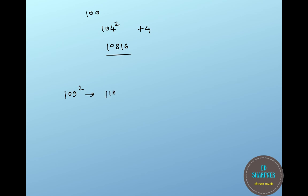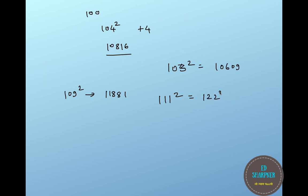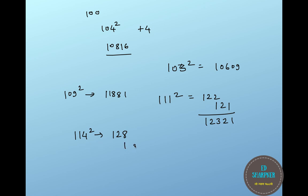The square of 109 is 11881. The square of 103 is 10609. For the square of 111: add 11 to 111 to get 122. Then write the square of 11, which is 121, starting just below the units digit — and add together to get 12321. For the square of 114: add 14 to 114 to get 128. Write the square of 14, which is 196, below the units digit of 128, and add to get 12996.